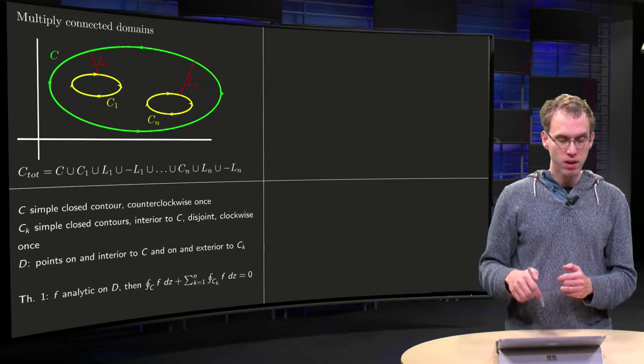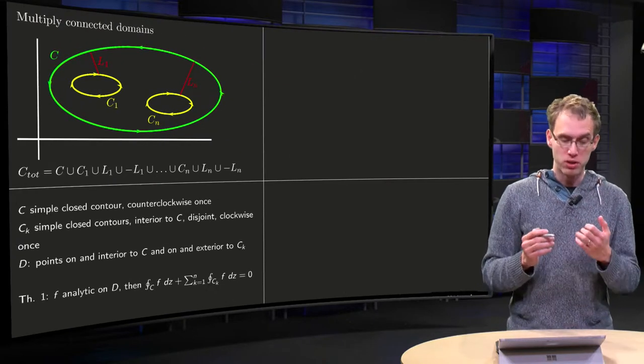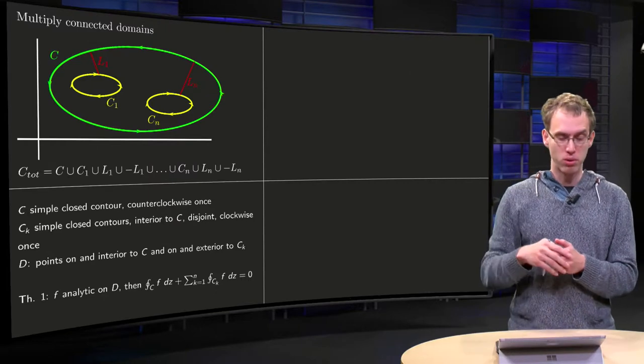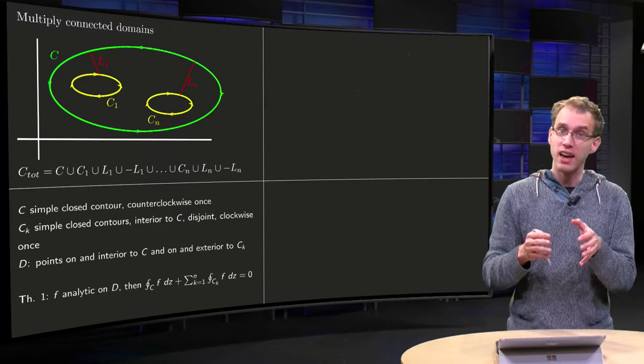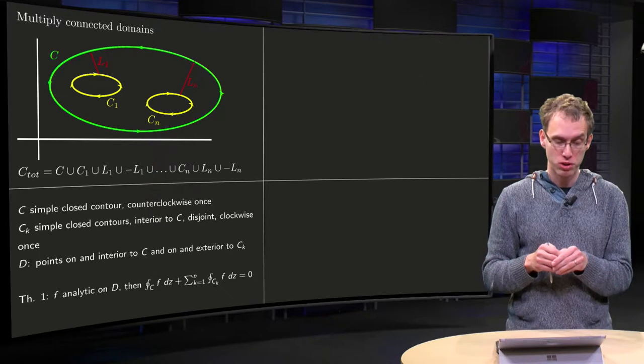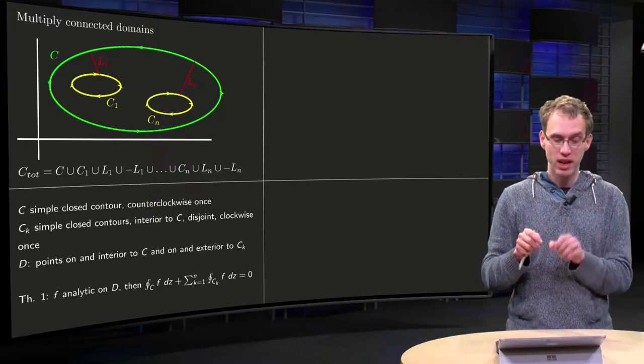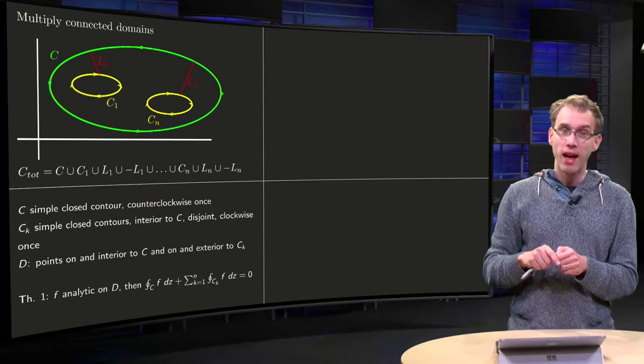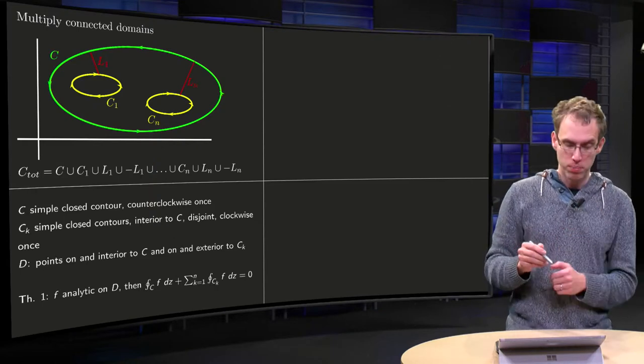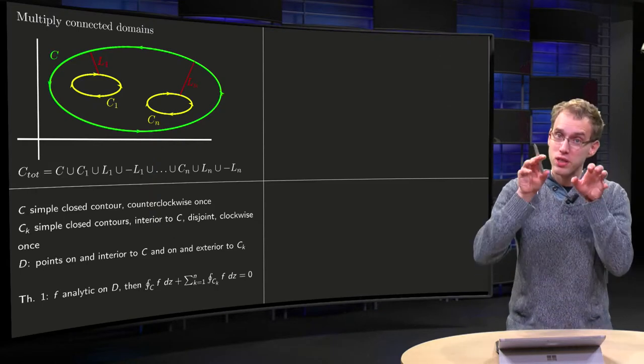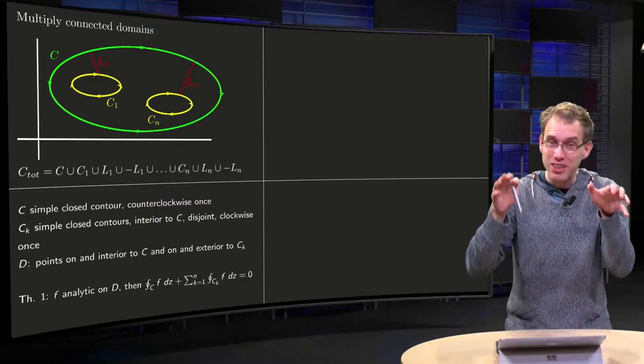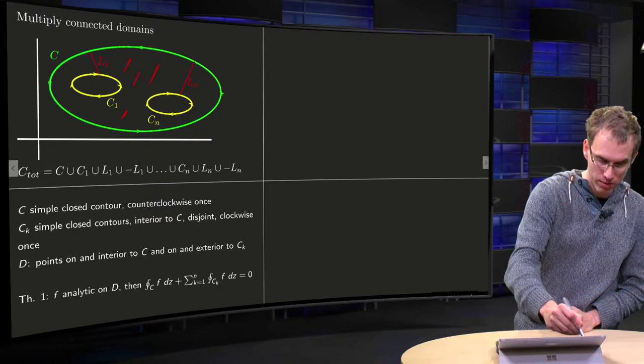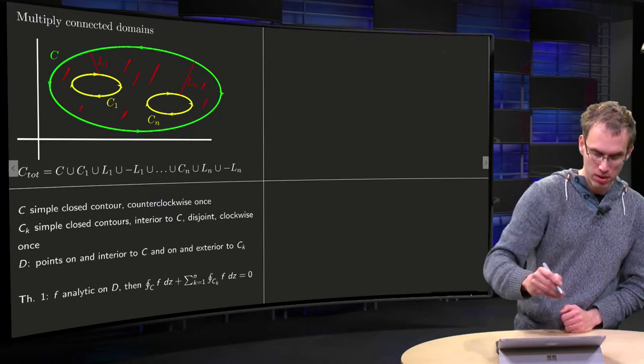So summarizing, c simple closed contour, counterclockwise once. The ck are simple closed contours as well, they are all inside, disjoint, we go clockwise along those. And the d are the points on the interior to c, but exterior to the ck, so the d points are over here, like this.